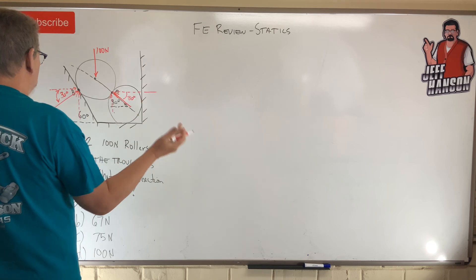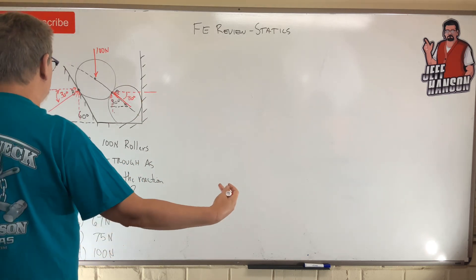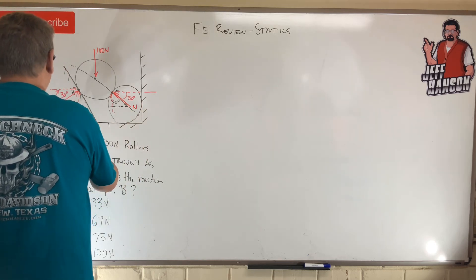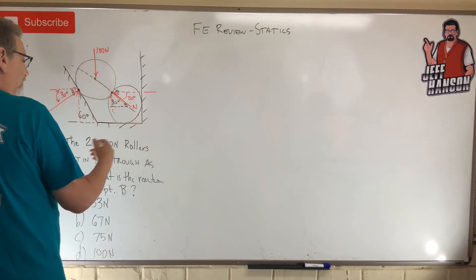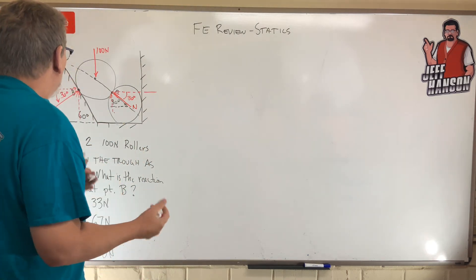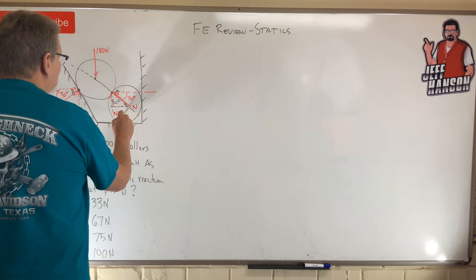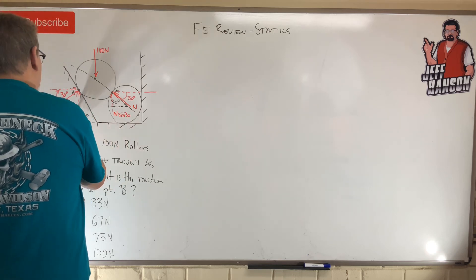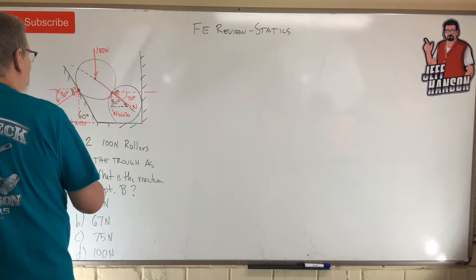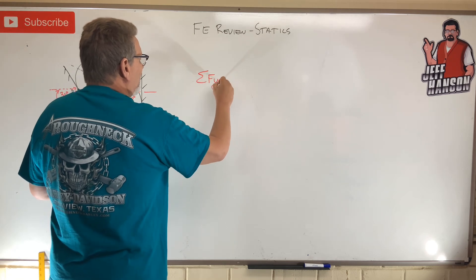This is a symmetric system — both of those normal forces are pushing at the exact same angle. So if I call one N, I can call the other N as well. They're going to be the same because they're pressing at the exact same angle on the same body. So each one contributes N·sin30°.